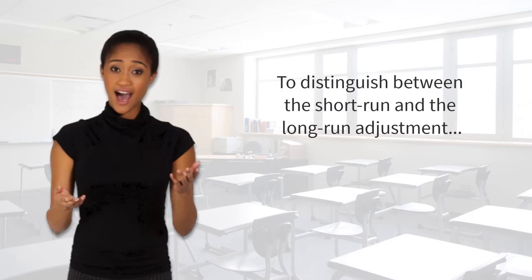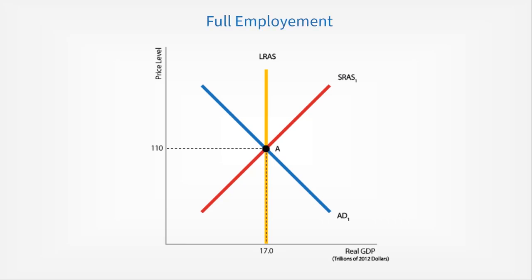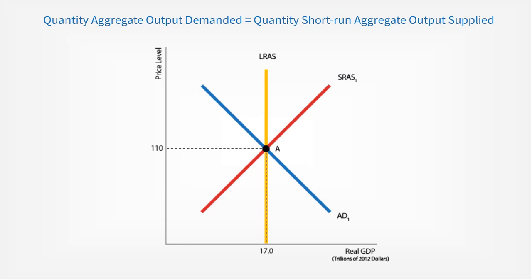To distinguish between the short-run and the long-run adjustment, consider an economy in long-run equilibrium. Recall that this occurs when the aggregate demand, short-run aggregate supply, and long-run aggregate supply curves intersect at a single point, indicating an economy is experiencing full employment where the quantity of aggregate output demanded is equal to the quantity of short-run aggregate output supplied.